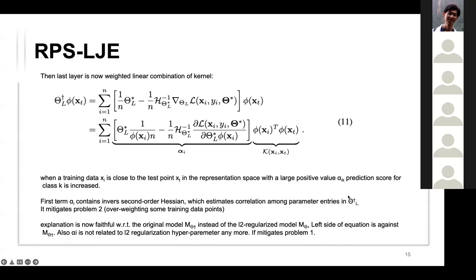The first term of the kernel contains the inverse second-order Hessian, which estimates correlations among parameter entries in zeta-dagger. This mitigates problem two by preventing over-weighting of certain training data and enabling more diverse explanations. The explanation is now faithful with respect to the original model dagger, instead of the L2-regularized model, which mitigates problem one.